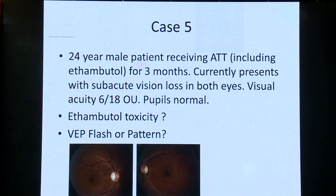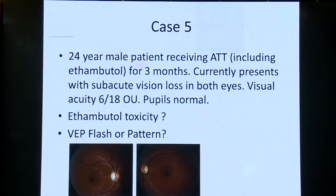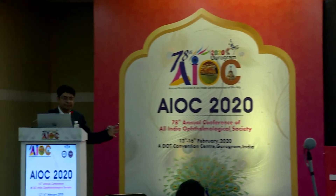A 24-year-old patient on ATT — ethambutol particularly — with 6/18 vision. The question was ethambutol toxicity or not. You need to know that tuberculosis can cause damage to the optic nerves and brain in multiple ways, so we considered both disseminated TB imaging and ethambutol toxicity. The flash was not significantly affected, but the pattern VEP was severely affected, suggesting toxicity. Pattern VEP is the most sensitive sign to detect early toxicity.